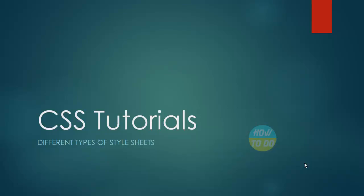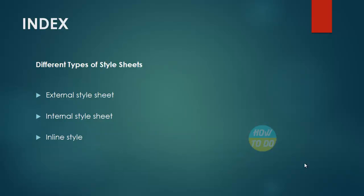Hey guys, this is Satya. Hope you all are doing well. Today in this particular video I would like to explain about CSS tutorials, specifically the different types of style sheets available in CSS, which is Cascading Style Sheets. The three different types are: external style sheet, internal style sheet, and inline styles.